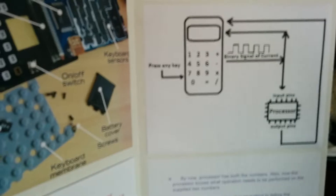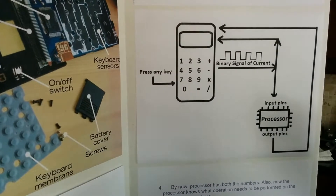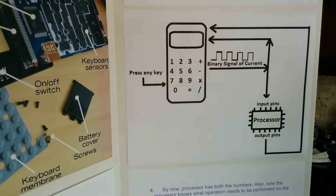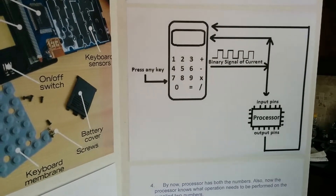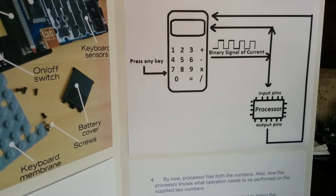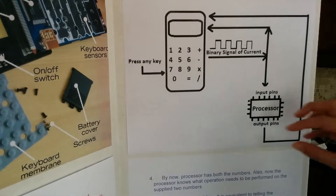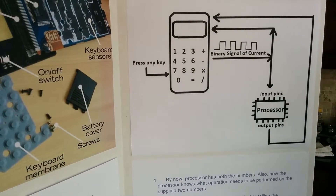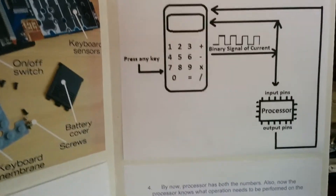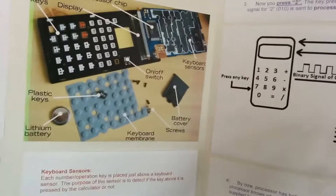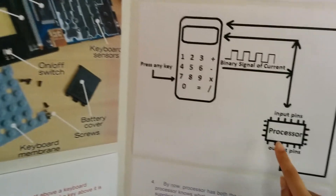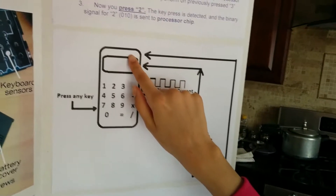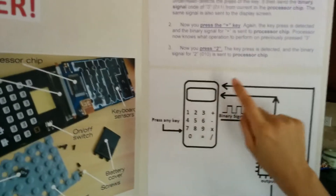Now this is when everything starts working. The processor chip uses multiple logic gates — all the logic gates it has to — to perform the operations. So mainly inside the processor chip, the logic gates do the calculations. And then when it gets the answer, it will come out as a binary signal, and then it'll get sent to the display — behind the display, it'll get sent.